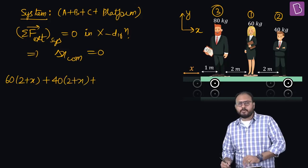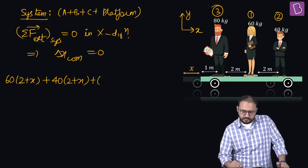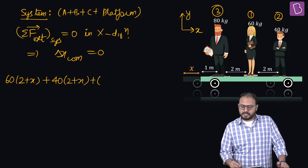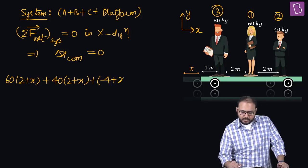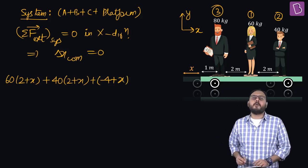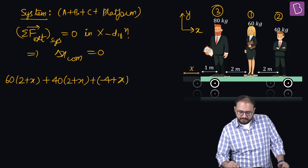Then comes that burly big redhead. He was at position 3 before, he walked 4 meters to the left. How much is the displacement? Minus 4? Wrong. Minus 4 is on the platform. The platform also moves.